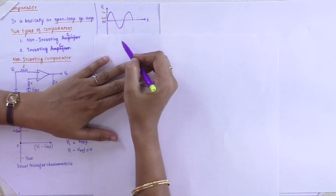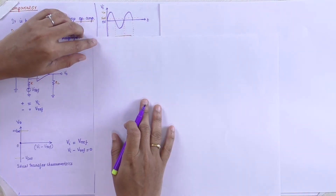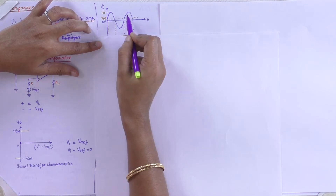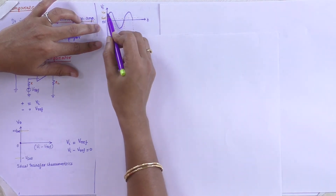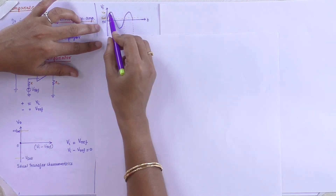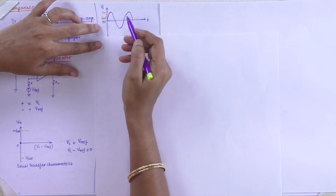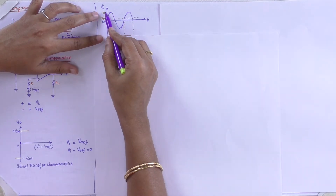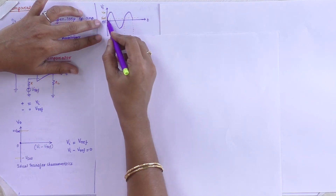Coming to the implementation of the non-inverting comparator — how VI (input voltage) and the reference voltage work. Consider the input voltage as a positive sine waveform starting from zero, with maximum amplitude Vm. We are going to fix some reference voltage value. For example, considering maximum voltage as 5 V and reference voltage as 1 V.